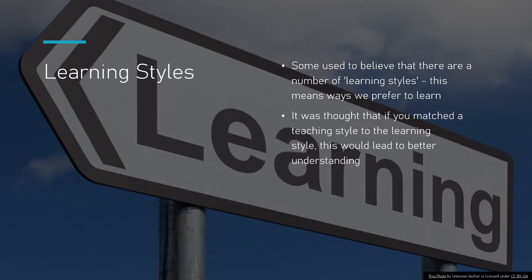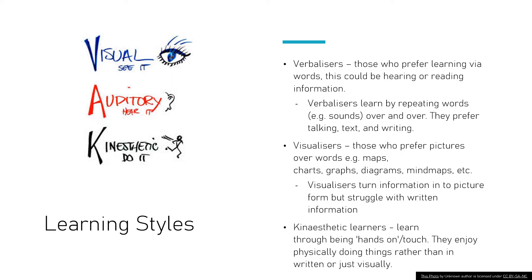The important thing to note is that the research really does lead us, and what the research found was that actually this didn't have an impact. Learning styles has been debunked since, and you don't often find it in good educational institutions because there's nothing really to back it up. There were three main types of learning style, though many more exist.